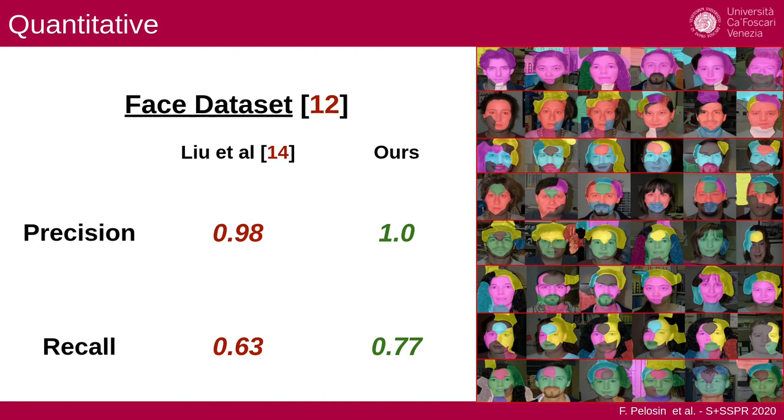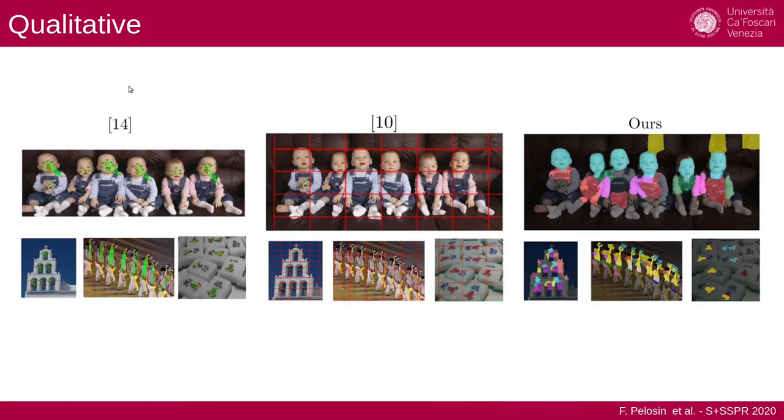Here we have the quantitative comparison, and you see on the right some visualizations where we achieve optimal results. We compared against a method which was the only method able to find more than one pattern, which is method 14. Here you can see a qualitative comparison. You see they found just the face pattern, and here they have more than one pattern.